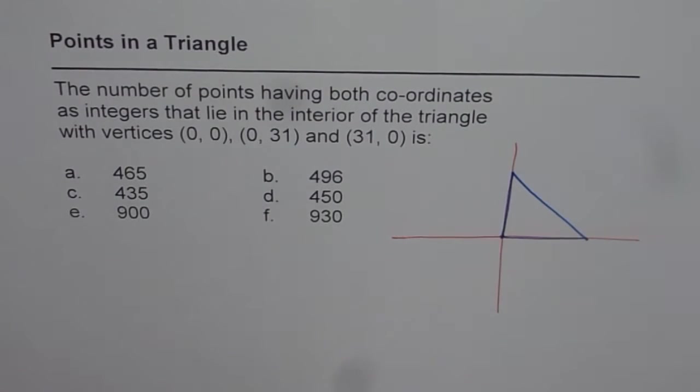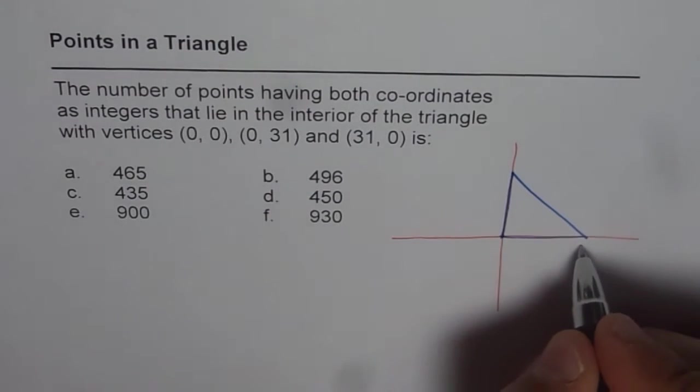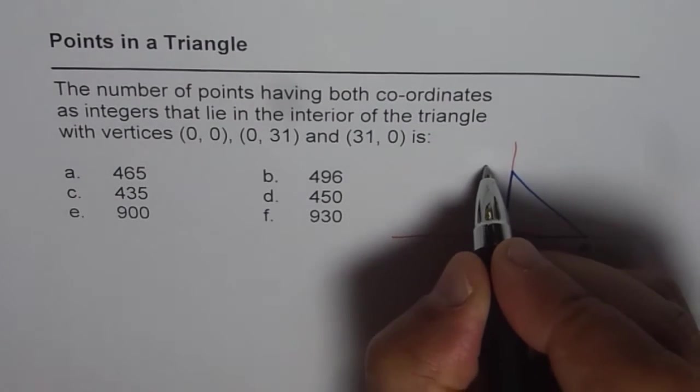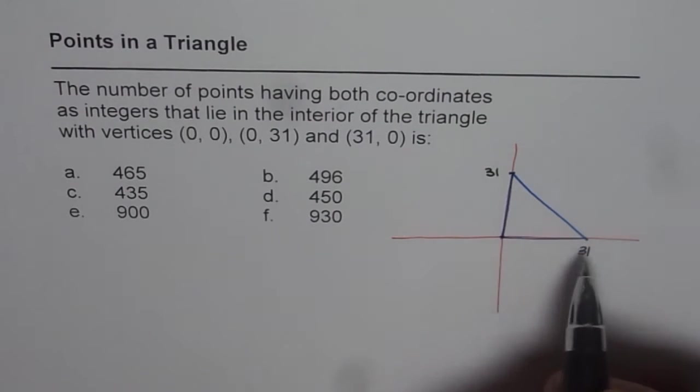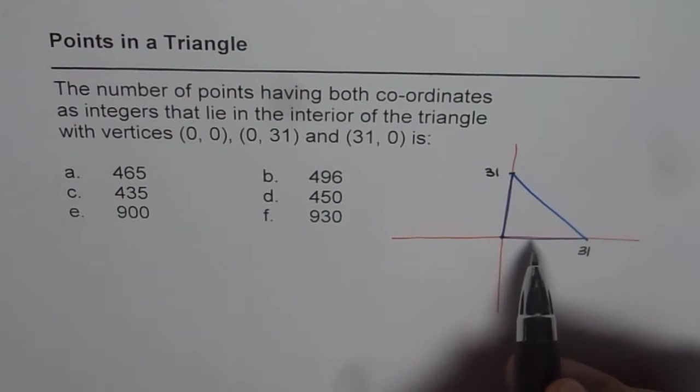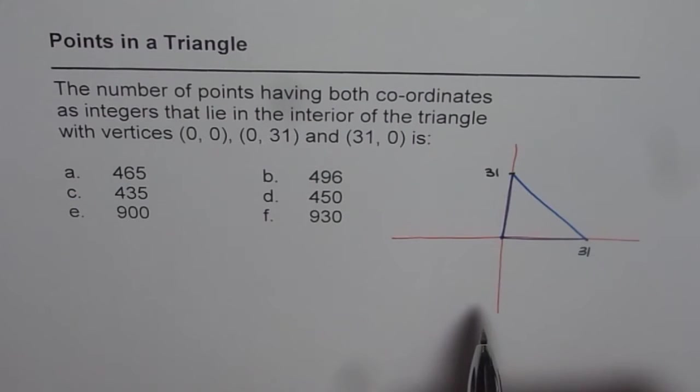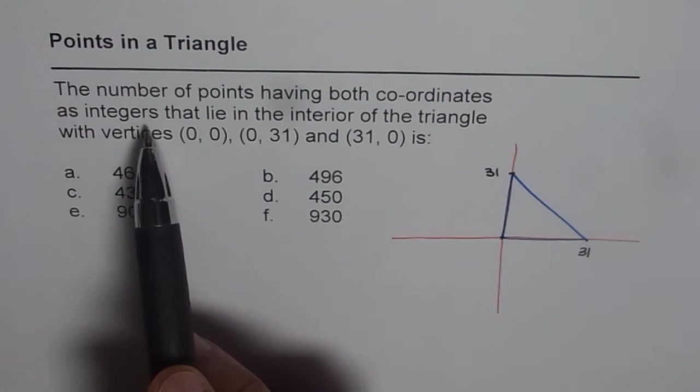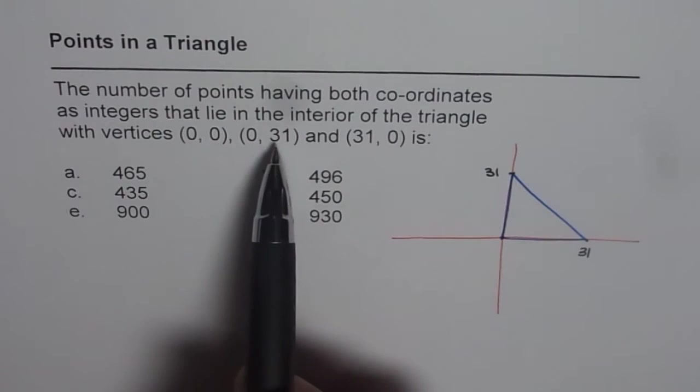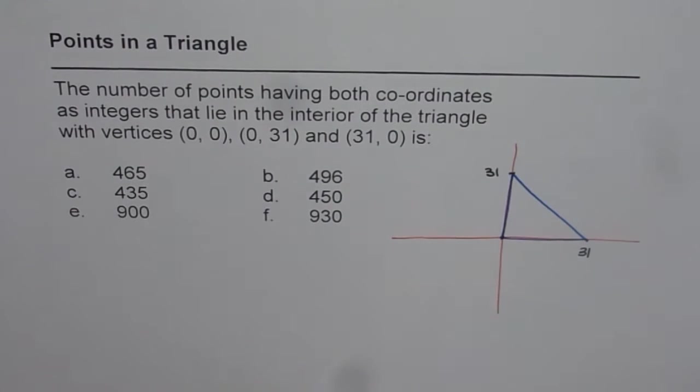Now in this triangle the points here are 31 and 31, so these are your points. And when you connect these points you get a triangle. Now the question is how many points inside the triangle have coordinates as integers. Like (0,0), (0,31), (31,0) are integers, so we need these kinds of integers.